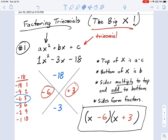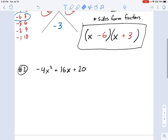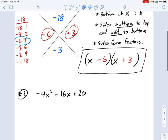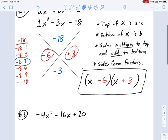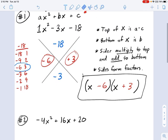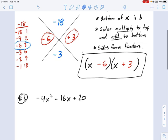So let's move on to a different example. This is going to have another trinomial, but at first it's going to look pretty ugly, like negative 4x squared plus 16x plus 20. And before you jump right into doing this with the big X, I always want you to do this first.